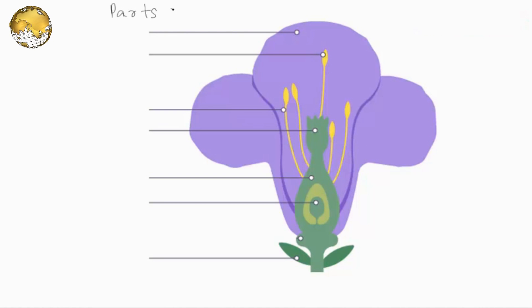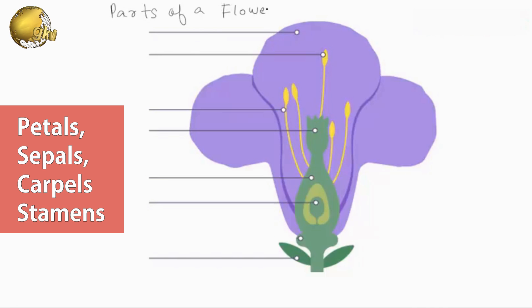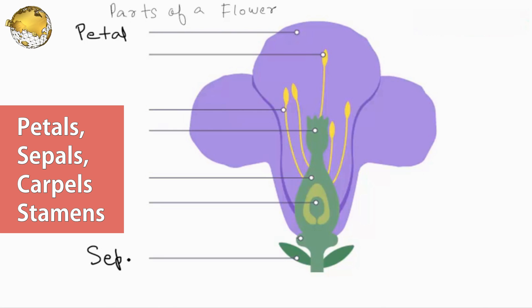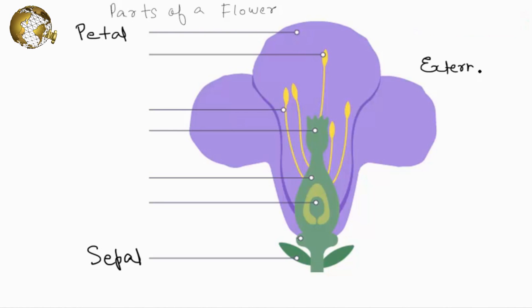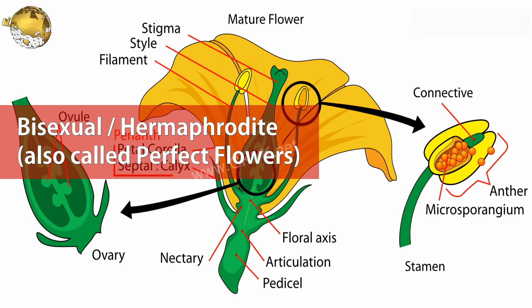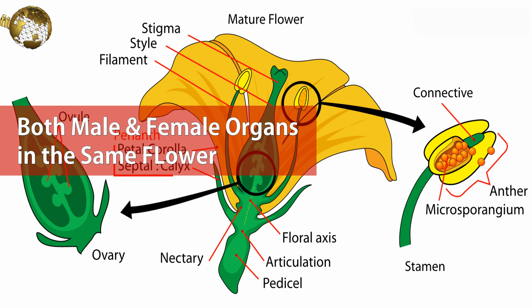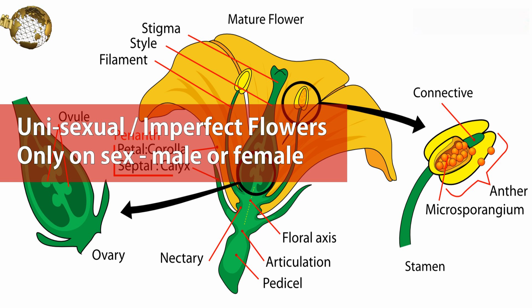To understand the reproductive organs of a plant, the parts of the flower should be known, which include petals, sepals, carpels, and stamens. The external parts of the flower are the petals and sepals. Flowers can be unisexual or bisexual, also known as hermaphrodite, similar to genders in humans. Bisexual, also known as perfect flowers, have both male and female parts in the same flower, while unisexual, or imperfect flowers, have only one organ — either female or male.